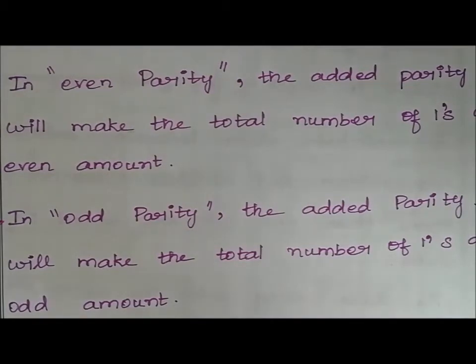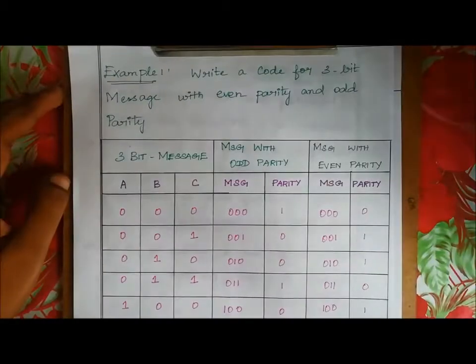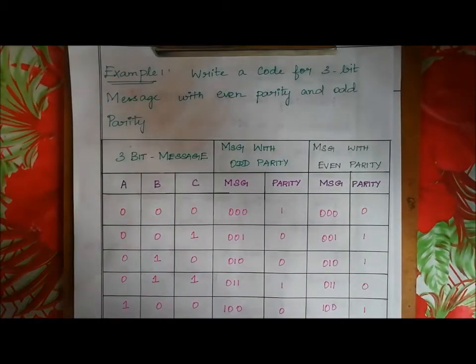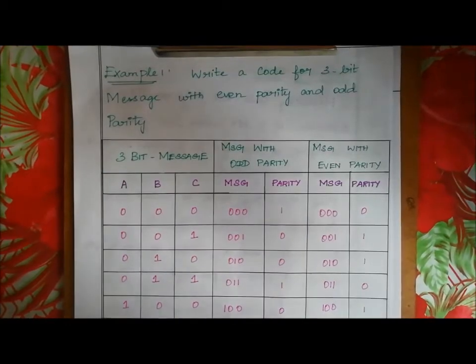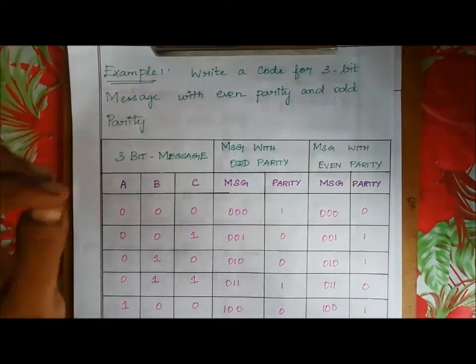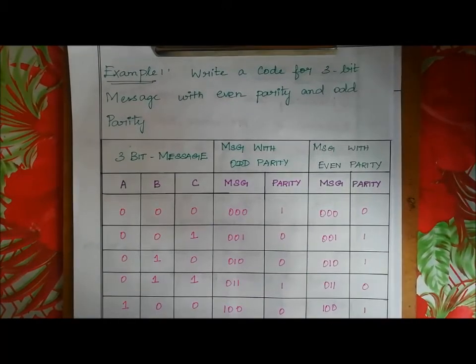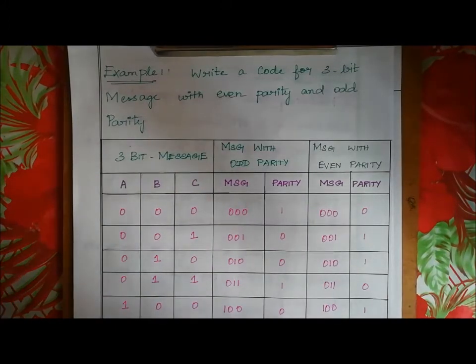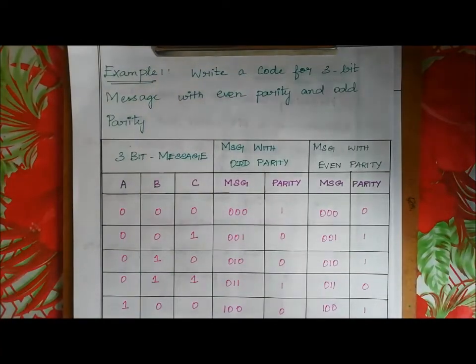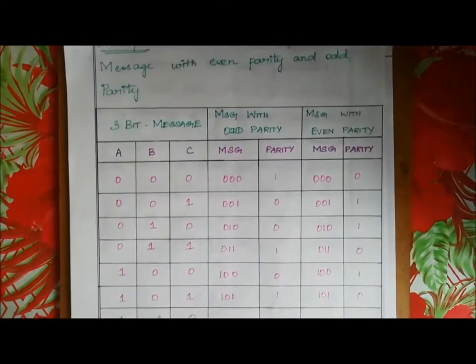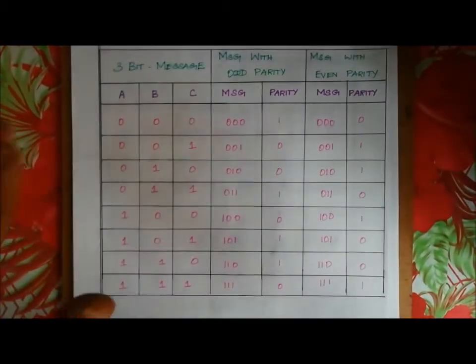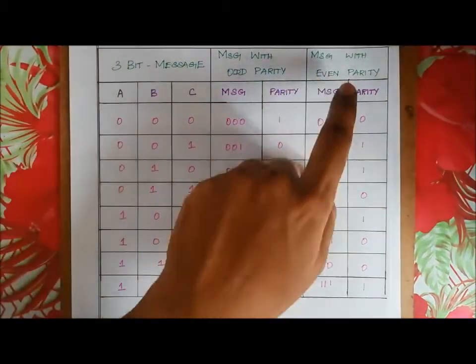Parity bit is an extra bit. There are 0 to 7 combinations — that is 8 combinations. The table has three columns: three-bit message, message with odd parity, and message with even parity.